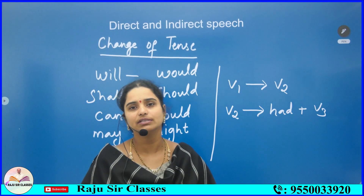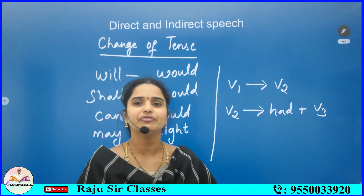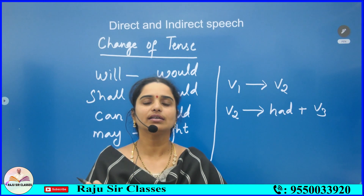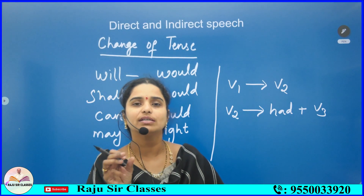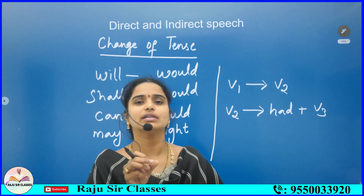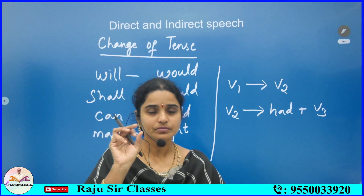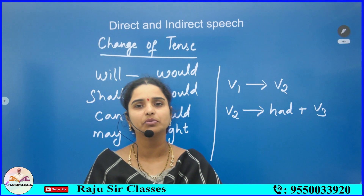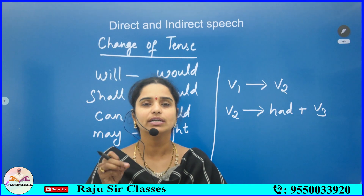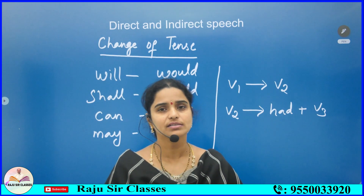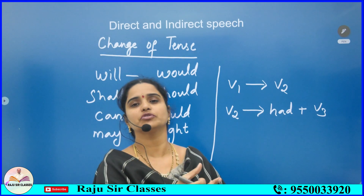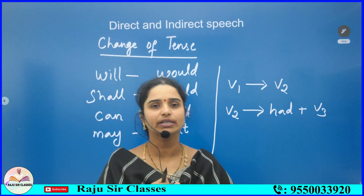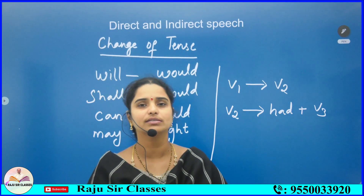Before starting the topic, one more important point: how many types of sentences are there in direct and indirect speech? We have four types of sentences: declarative, imperative, interrogative, and exclamatory. According to the sentence type, we have to change the tense and the structure when converting from direct to indirect speech.